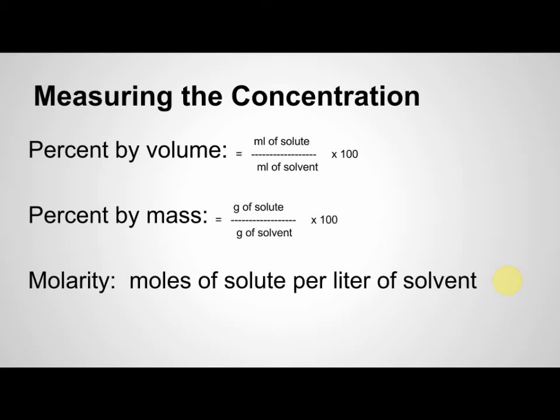So let's back up to percent by volume. Let's say I put 20 milliliters of a solute with 100 milliliters of a solvent. 20 divided by 100 is 0.2 times 100 is 20%. Now let's say we have 30 grams of solute and we put it in 100 grams of solvent, 30 divided by 100 is 0.3 times 100 is going to give us 30%. So that's just a couple of quick examples of how to calculate the concentration.